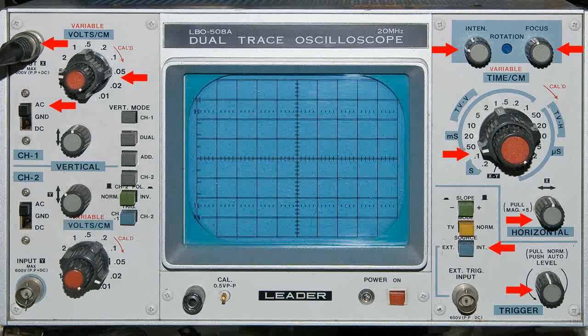We're going to have the scope in AC mode. That means that we're only going to be looking at AC signals, no DC signals. And this control will move our trace that's on the screen vertically up and down.